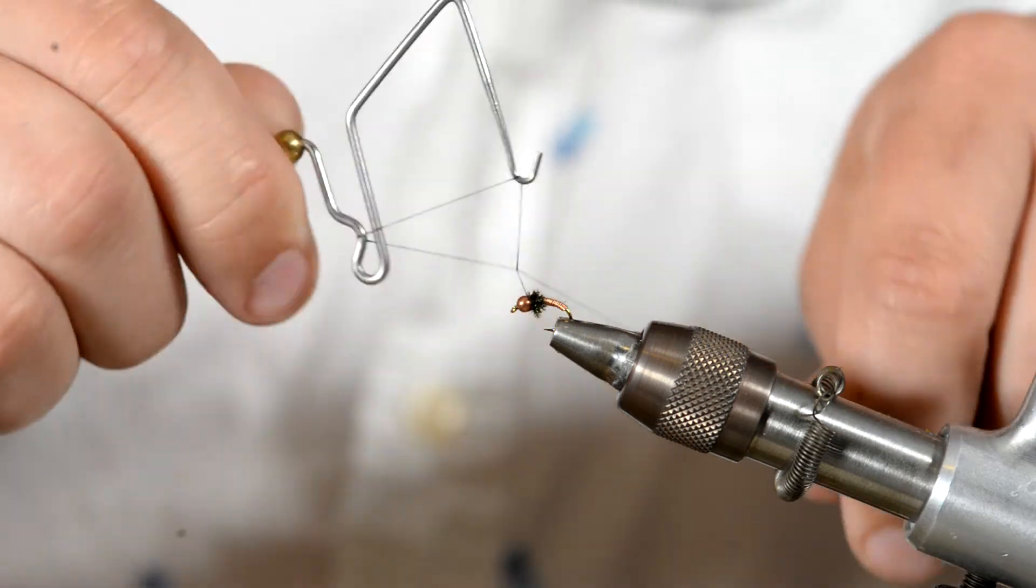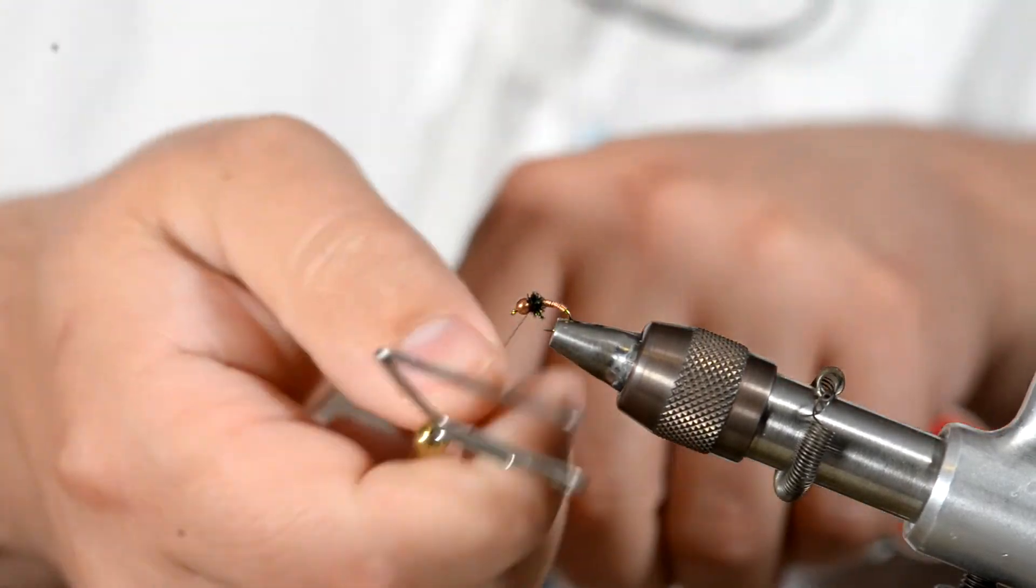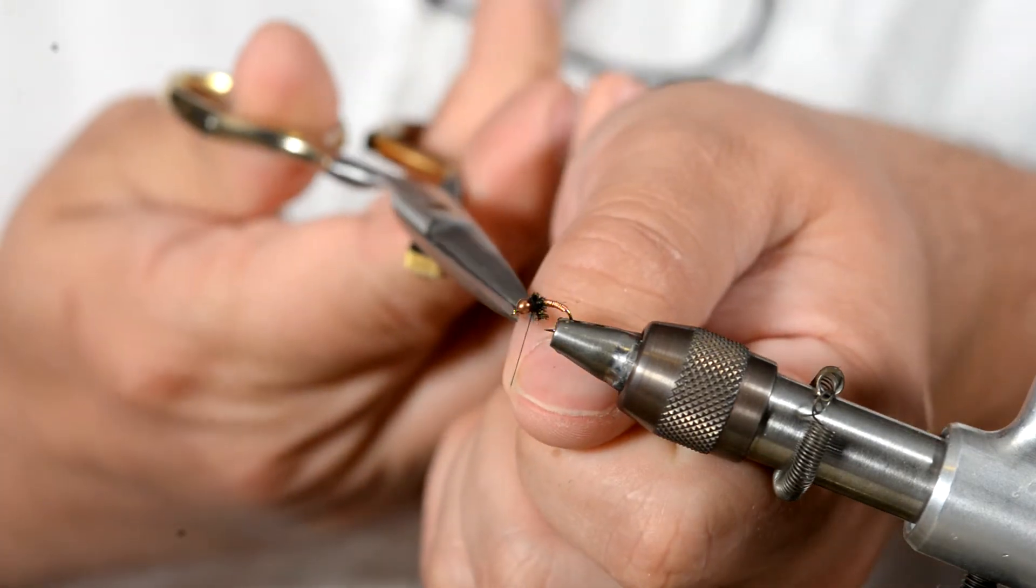Once you have your peacock herl collar laid down just whip finish and you have yourself a nice little brassy there.